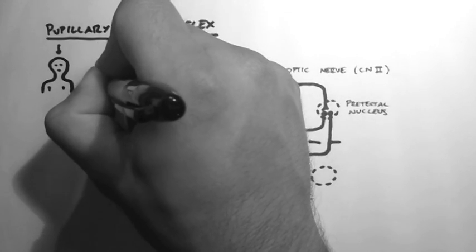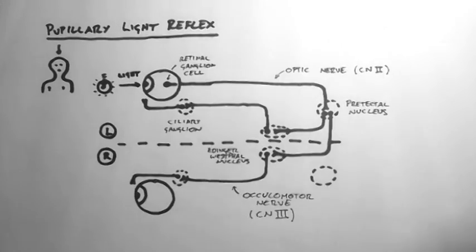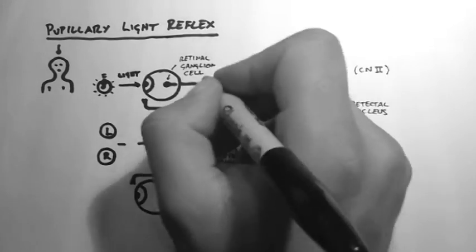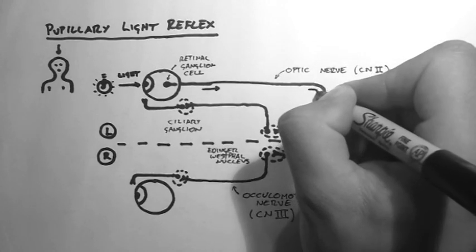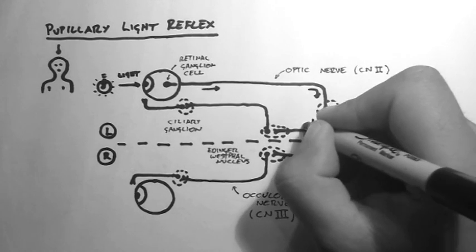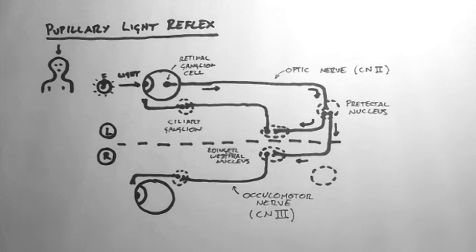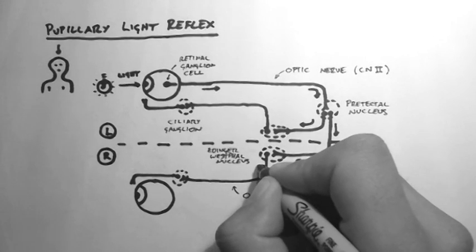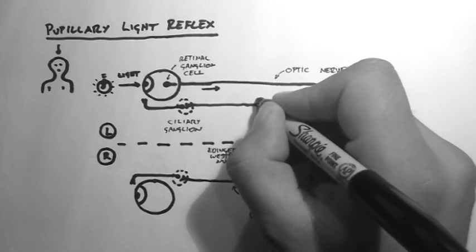Now if light is shone in the eye from here, the photoreceptors send a signal to the retinal ganglion cell, which sends its signal down the optic nerve. This signal gets sent to both sides of the brain stem, to the Eidinger-Westphal nuclei, and then on to the ciliary ganglion on the ipsilateral side.